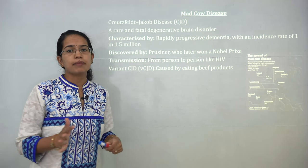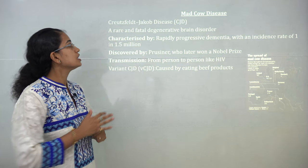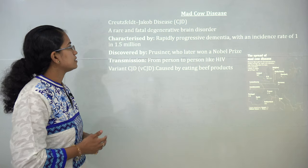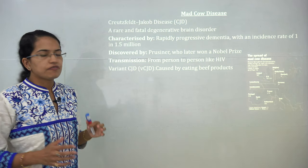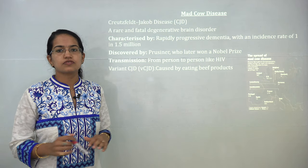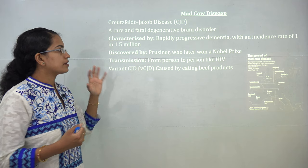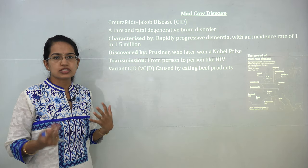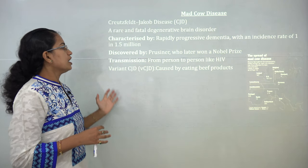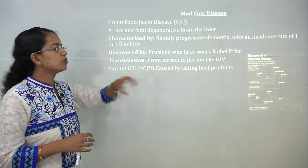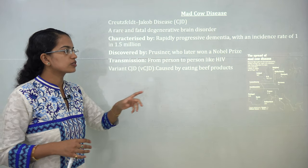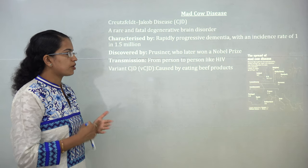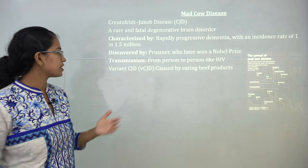Mad cow disease, also known as Creutzfeldt-Jakob disease (CJD), is a very rare and degenerative disease which affects the brain. It progresses very rapidly and causes dementia or loss of memory. It was discovered by Prusiner, who later received the Nobel Prize for this work, and it is transmitted from person to person similarly to HIV.